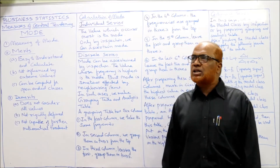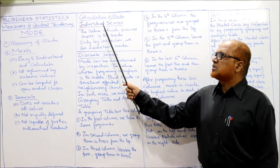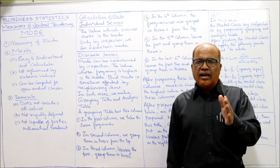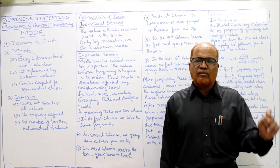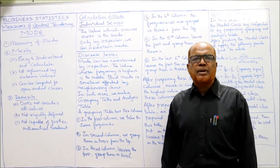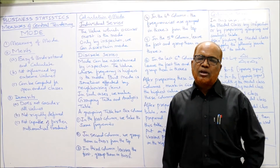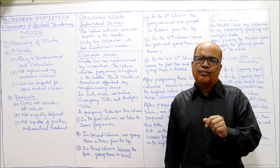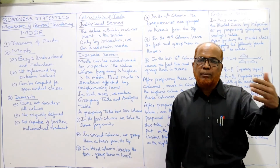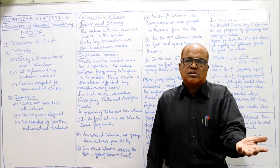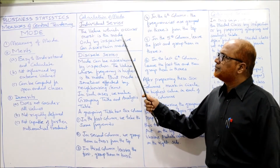Now we come to the calculation of mode, which depends on the nature of the series. The first type is individual series — where there are individual items without a frequency table. In individual series, simply by observation and inspection we can find out the mode. We see which value is repeating more number of times in the individual series — that value is the mode. No formula is needed; only by inspection we can find out mode in case of individual series.